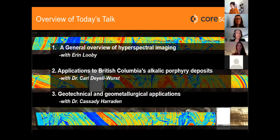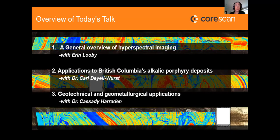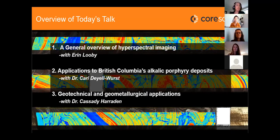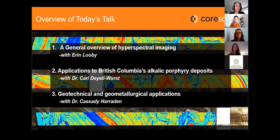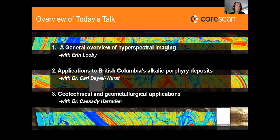Erin, Cass and I are part of Team CoreScan, where CoreScan is a global service provider for hyperspectral core imaging based in Australia. Cass and Erin are both based out of the Vancouver office, and I work out of Montreal. While you are going to see a lot of images that come from CoreScan, the technology we're going to talk about today is really not specific to any particular company — the intention is to provide a general overview on hyperspectral imaging technologies applied to the mining industry.